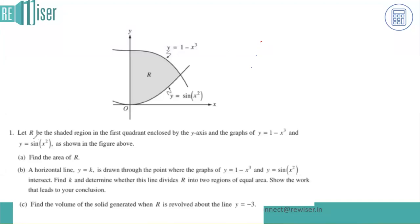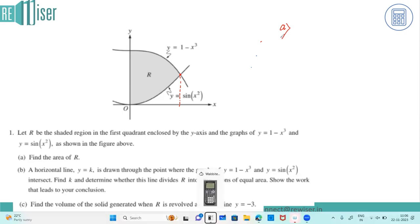In this question, let R be the shaded region in the first quadrant enclosed by the y-axis and the graphs y = 1 minus x cubed and sine of x squared, as shown in the figure. We need to find the area of R. To do that, the first thing is to figure out the point of intersection, which we will use our calculator to find.